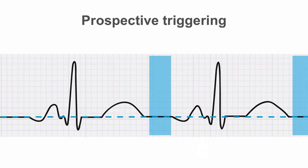Remember how this differs from prospective ECG gating, where only one part of the cardiac cycle is imaged. With prospective ECG gated scanning, it is not usually possible to obtain data throughout the entirety of the cardiac cycle. If using prospective ECG gating, the scan should be planned for the relevant part of the cardiac cycle for the valve you are trying to evaluate.